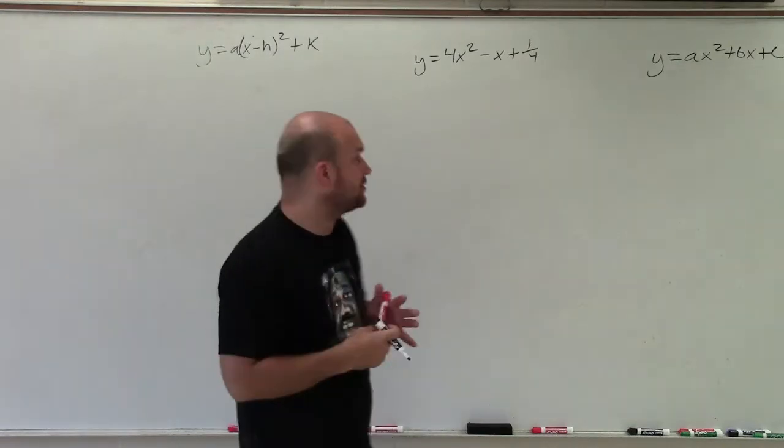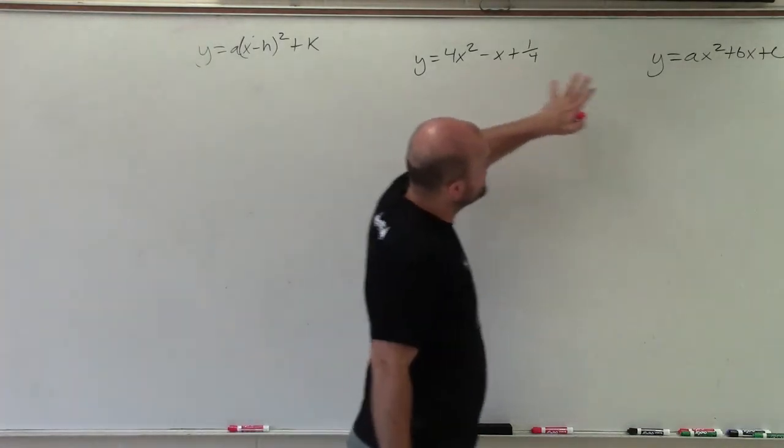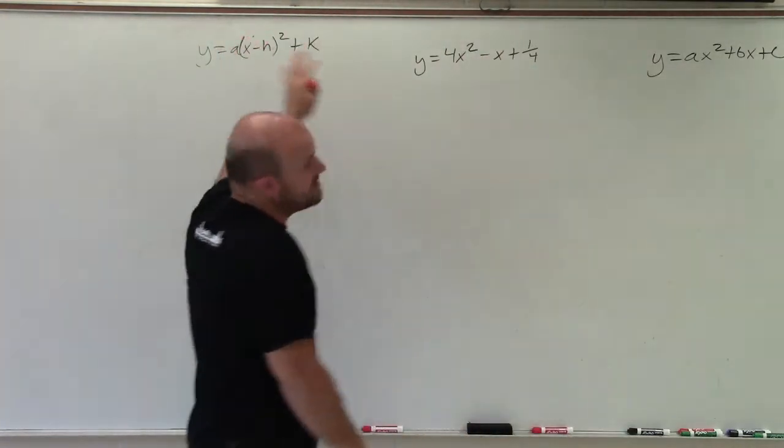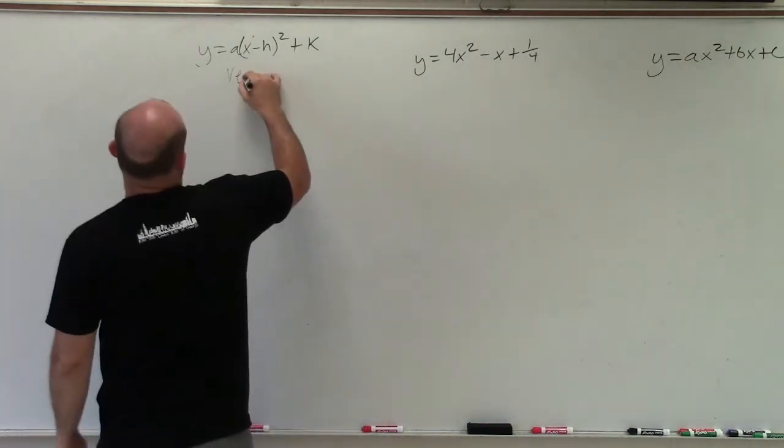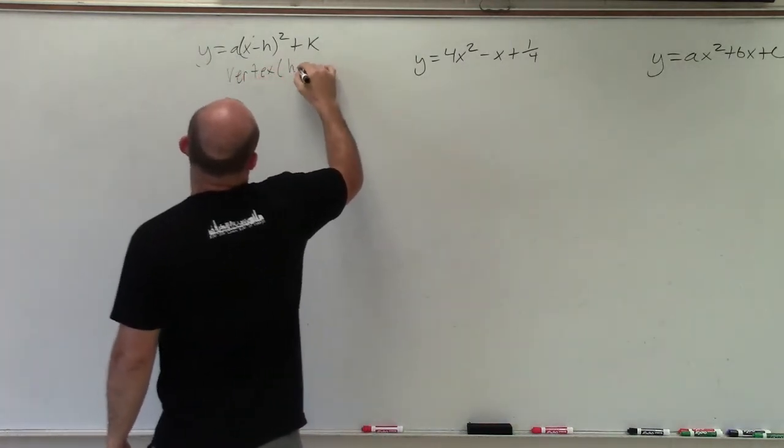Welcome ladies and gentlemen. What I'd like to do is show you how to graph this function when it's in standard form by converting it to vertex form by completing the square. Vertex is h comma k.